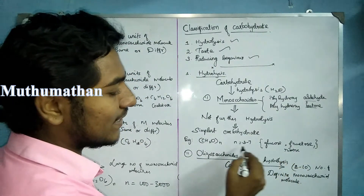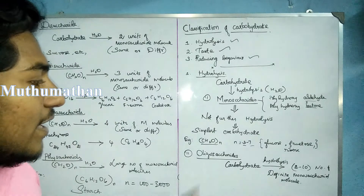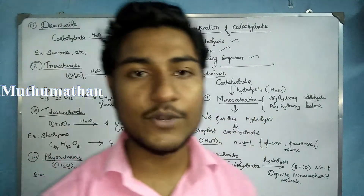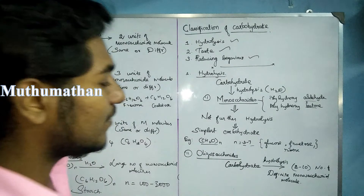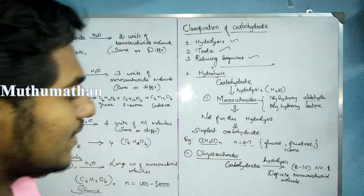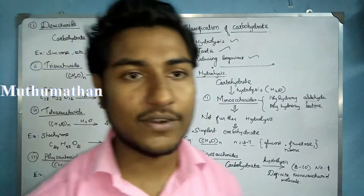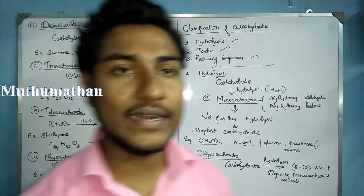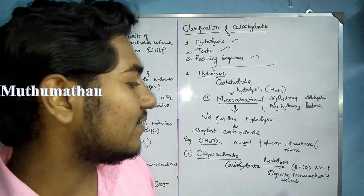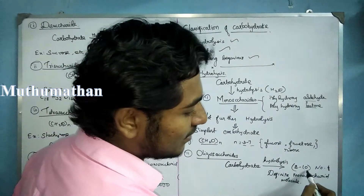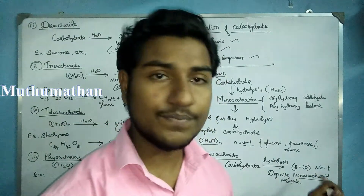Examples of monosaccharides include glucose and fructose. Monosaccharides are simple carbohydrates that cannot be hydrolyzed further into simpler carbohydrate units. If we perform hydrolysis on a monosaccharide, we get no simpler carbohydrate. Disaccharides, on the other hand, on hydrolysis give two units of monosaccharide molecules.